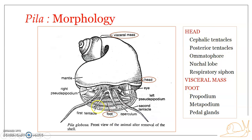Coming to the foot region: the foot is ventrally positioned, strongly muscular, and highly contractile. It is a greatly modified ventral part of the body used for locomotion, and is the most prominent locomotory organ in Pila. It is broad, with a flat creeping sole modified for creeping movements. It has two portions: the propodium (anterior part) and the metapodium (posterior part). The propodium forms the major part of the foot and is composed of densely packed muscle fibers.